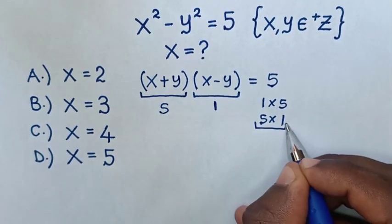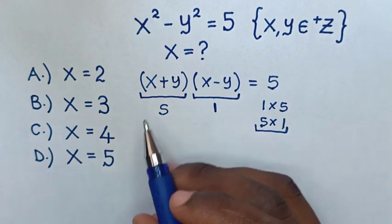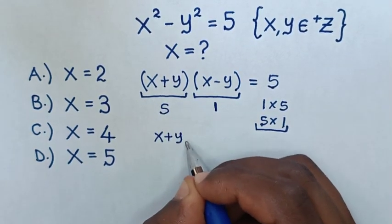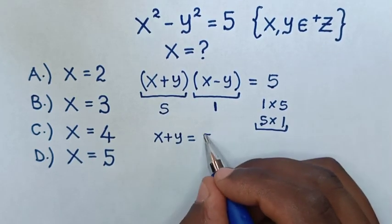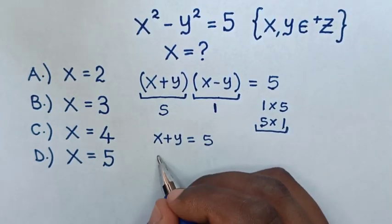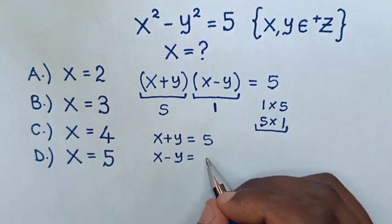Because 5 times 1 equals 5, we'll set x plus y equals 5 and x minus y equals 1.